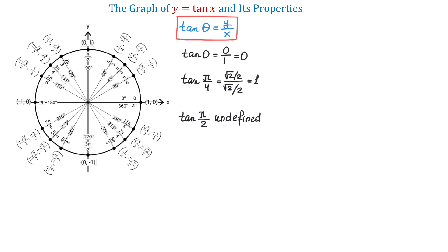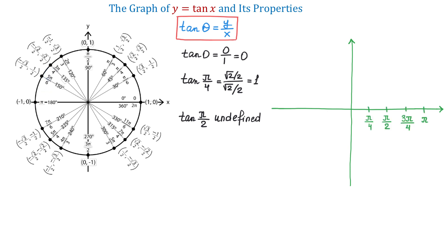Now, here to the right, I will draw the rectangular coordinate system and I will start the graph for the tangent function. On the x-axis to the right of the origin, I will plot 0, pi over 4, pi over 2, 3 pi over 4, pi, and so on. And to the left of the origin, we will have negative pi over 4, negative pi over 2, negative 3 pi over 4, and negative pi.